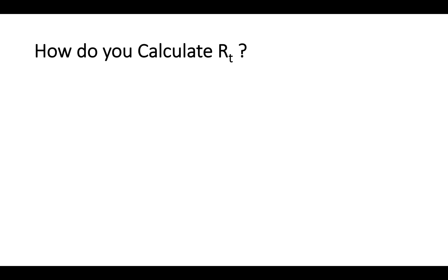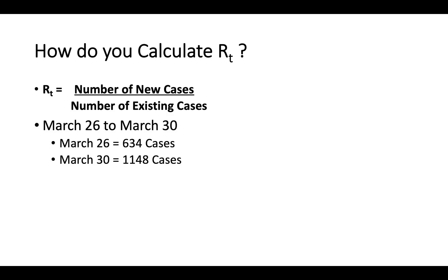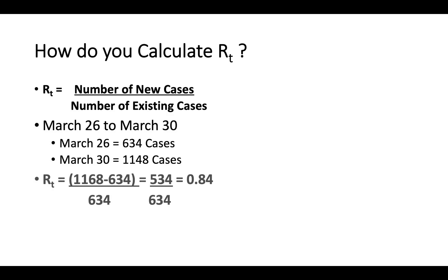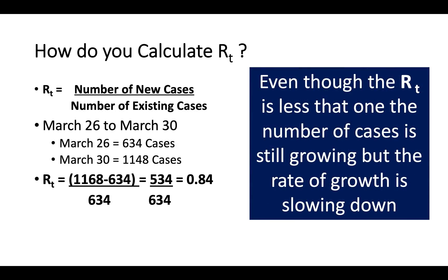How do you calculate RT? Let's take an example for Canada. It's the number of new cases over the number of existing cases. From March 26th to March 30th, that's a 4-day period. There are the number of cases — we subtract them — 534 over 634, so a reproductive number of 0.84 over a 4-day period. Now remember, even though the reproductive number is less than 1, the number of cases is still growing, but the rate of growth is slowing down over a 4-day period.